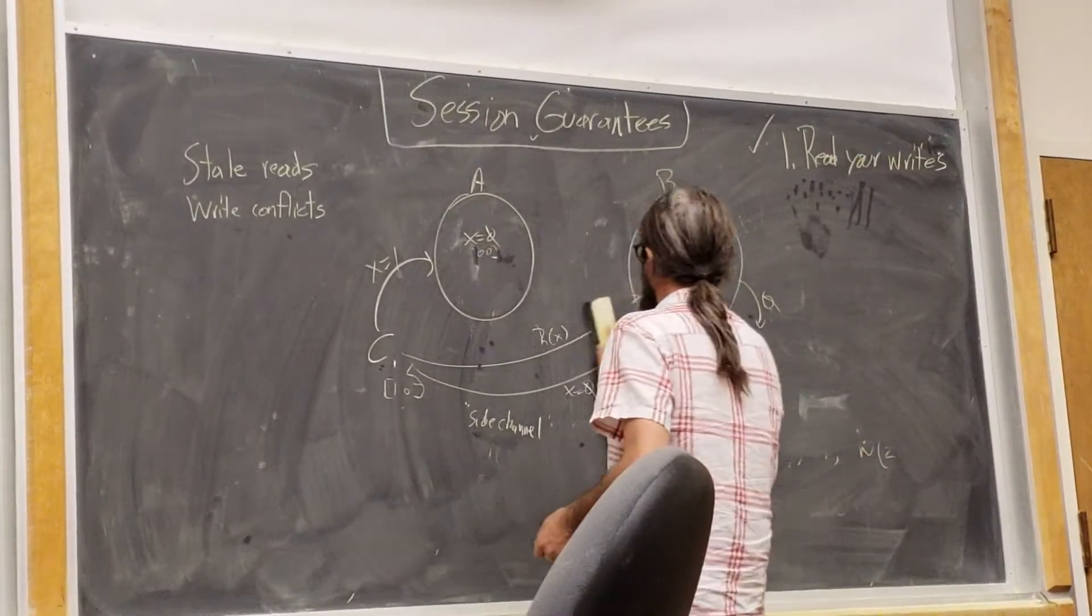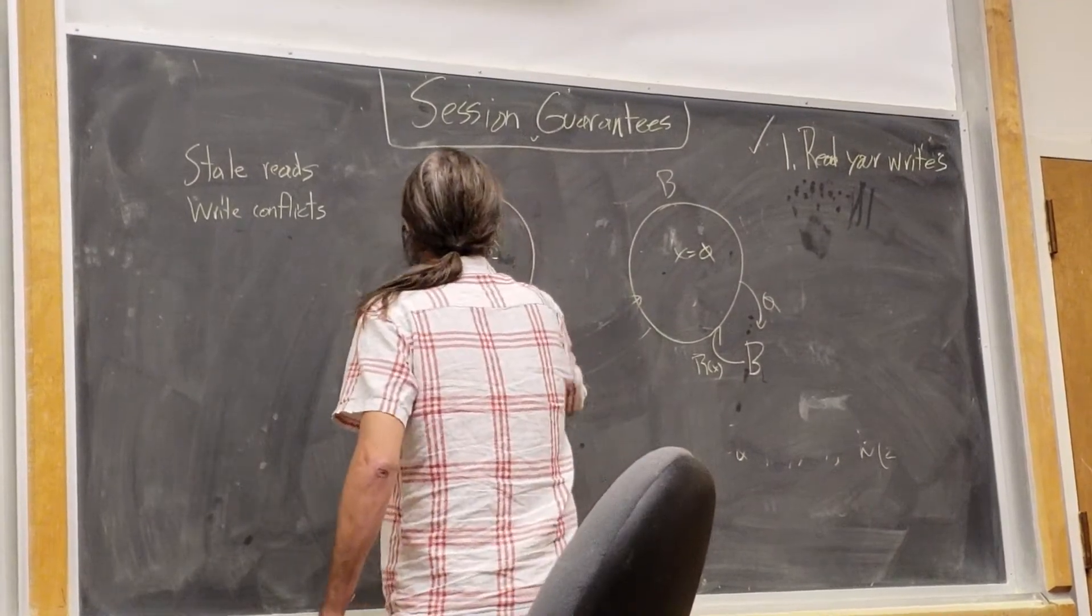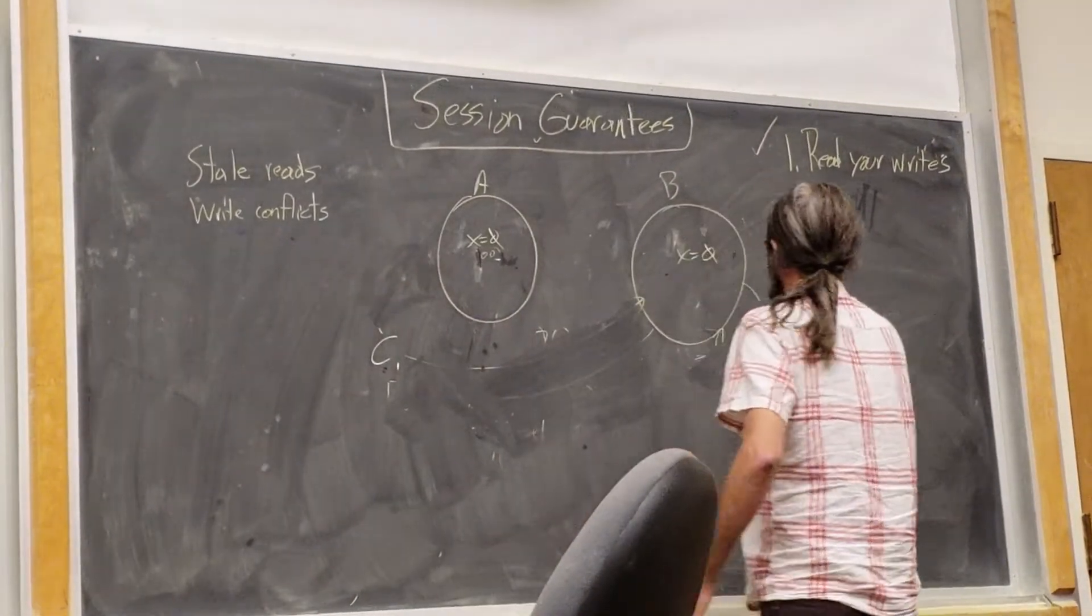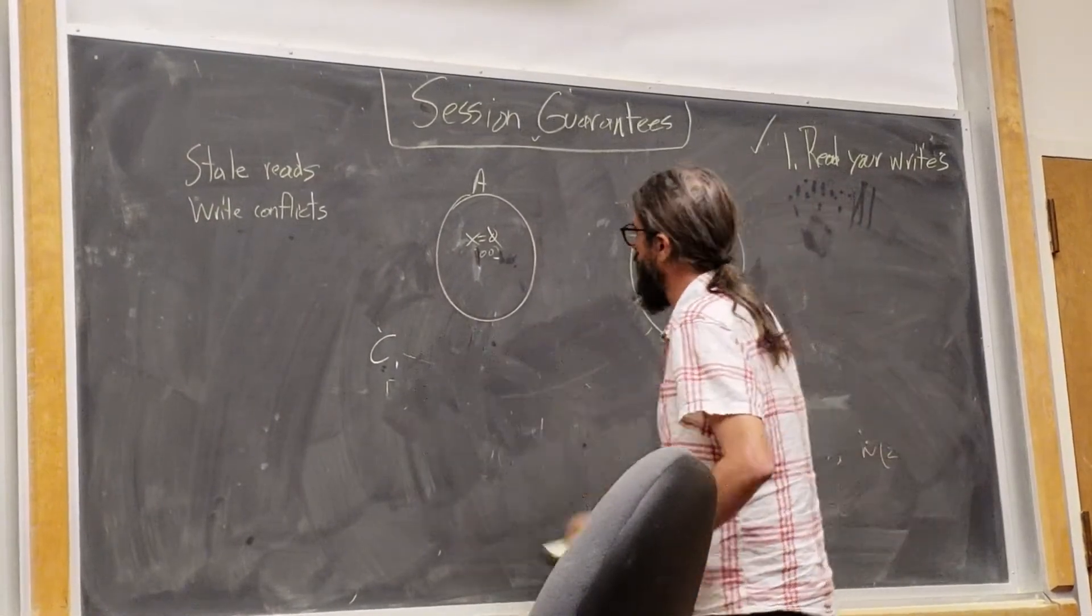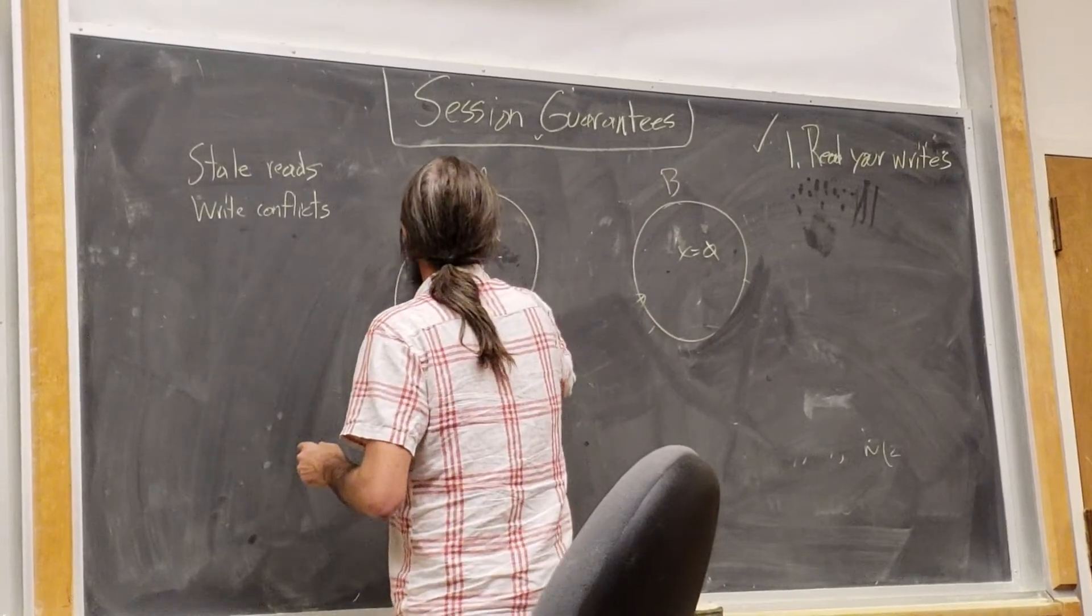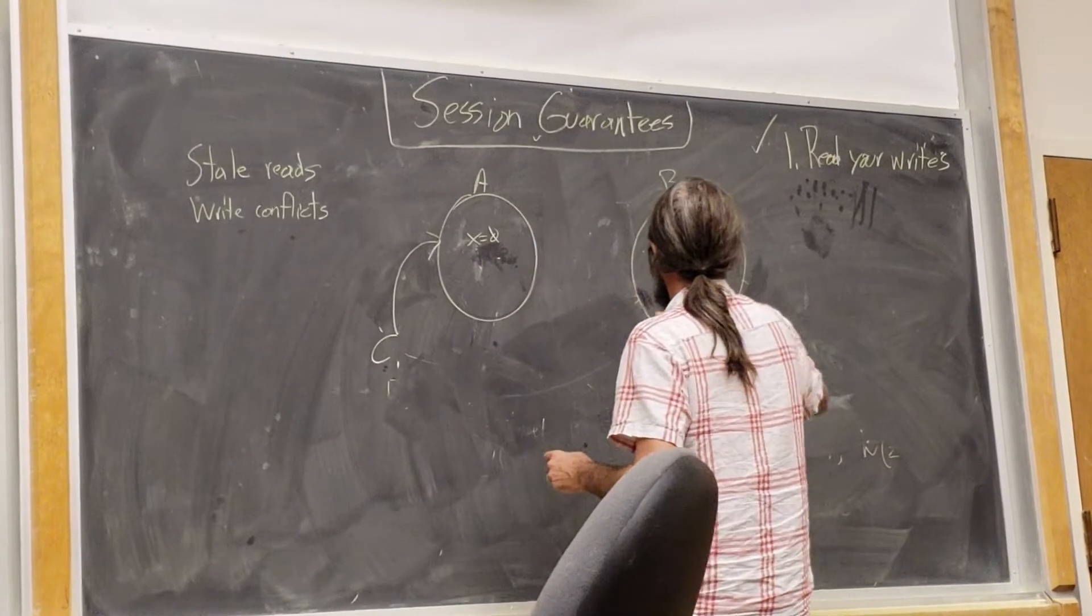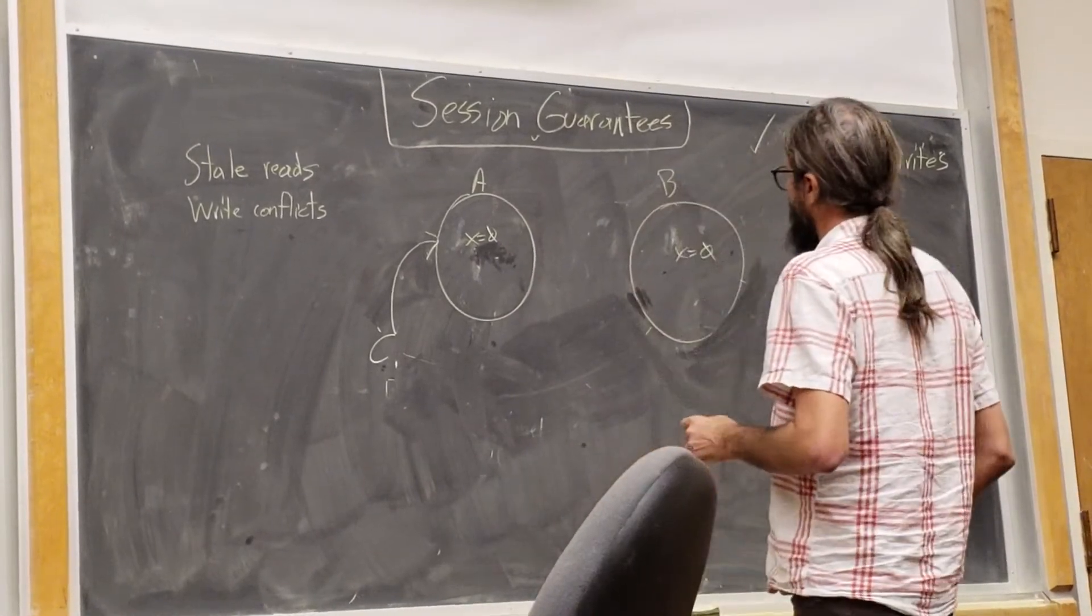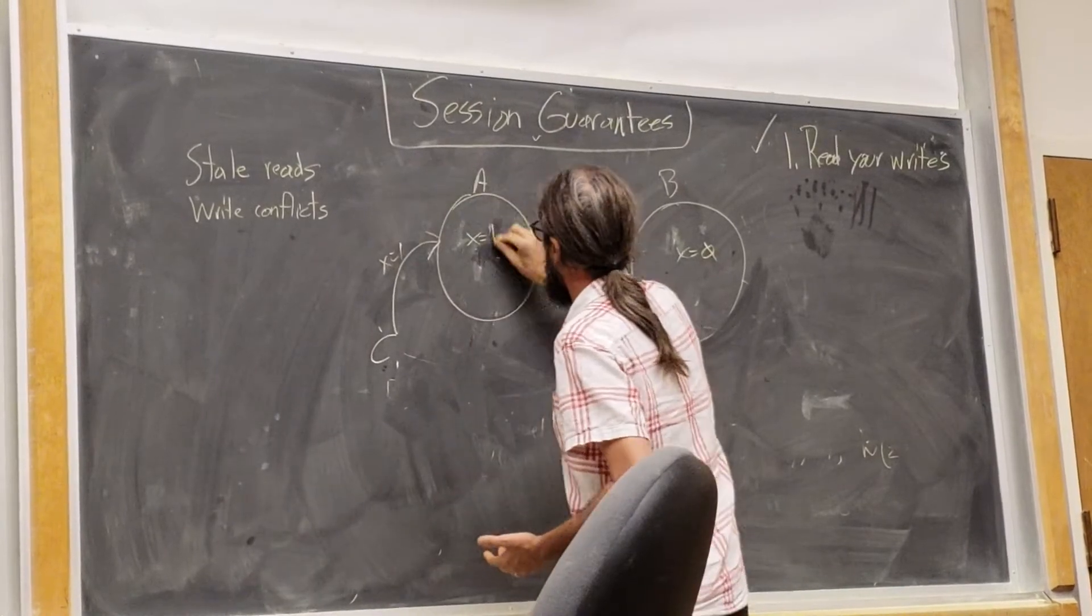Let's look at another scenario that could be bad. So client 1 writes x is 1.